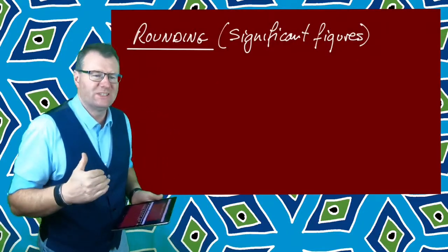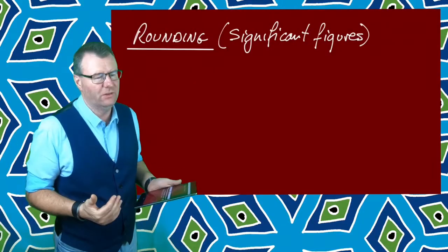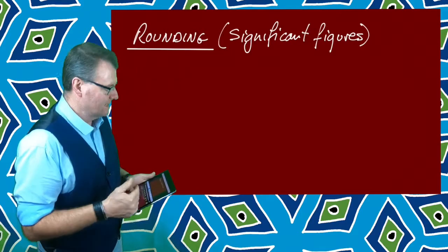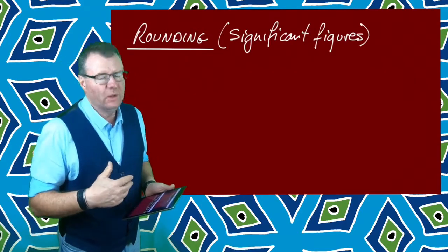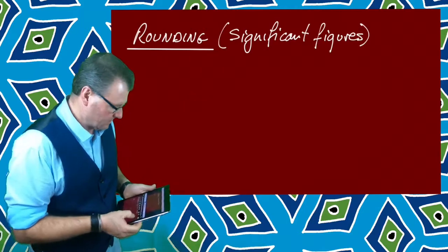Hey, let's talk about how we can round to significant figures. They're a bit different to decimal places. Let's go through some examples, that might be the best way to do this.